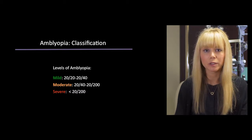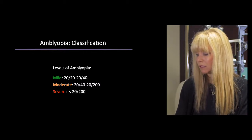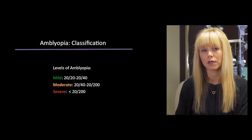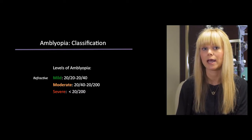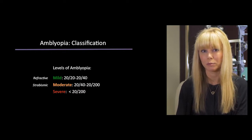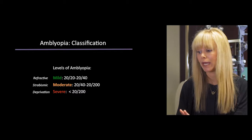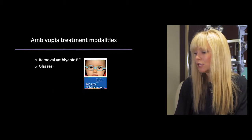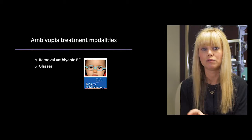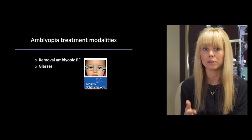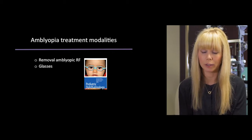Amblyopia severity is classified as mild, moderate, and severe, with specific visual acuity cutoffs for each level. Refractive amblyopia tends to be milder, strabismic amblyopia is often moderate, and deprivation amblyopia is typically the most severe form — though this doesn't always hold. When treating amblyopia, the first step is removing the risk factor: prescribing glasses, correcting eye alignment with surgery, or performing cataract surgery as applicable.